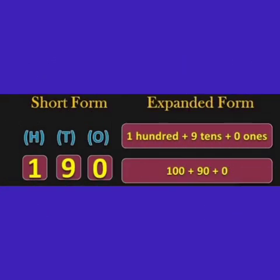Now students, we have one more example to understand this topic: short form and expanded form. In the short form, 1, 9, 0 is the short form of 190, and the expanded form of this: we will write in words as well as in numbers. In words, one hundred plus nine tens plus zero ones, and in numbers 100 plus 90 plus 0. Thank you.